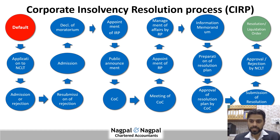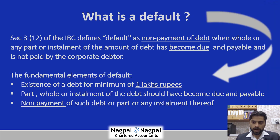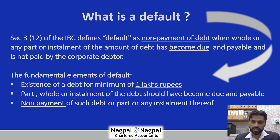We will discuss each and every aspect of this process in detail one by one. Let us first start with the default. What is default? IBC defines default as non-payment of debt when it has actually become due — non-payment when it is due. The default has to be more than one lakh rupees for initiation of CIRP.